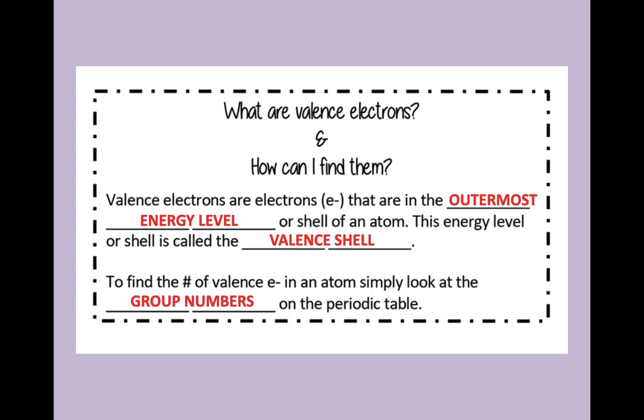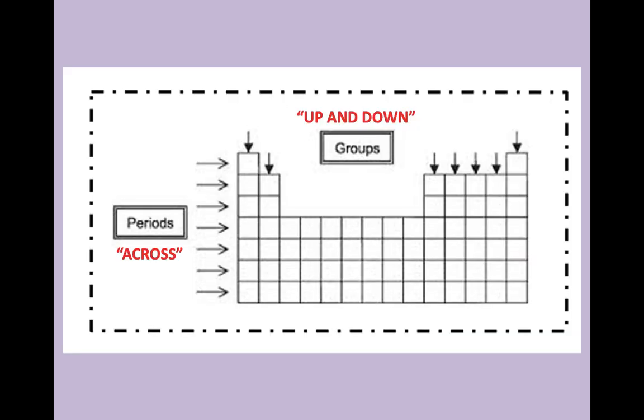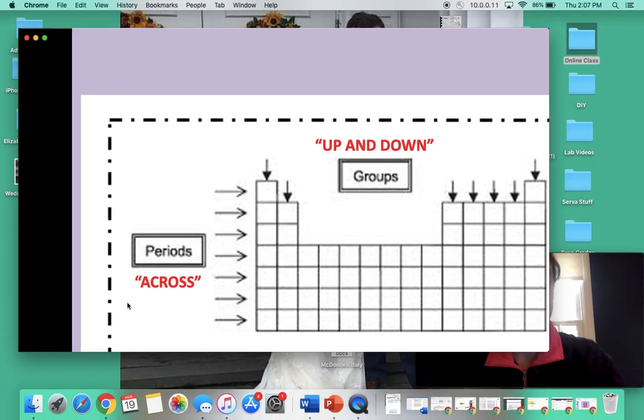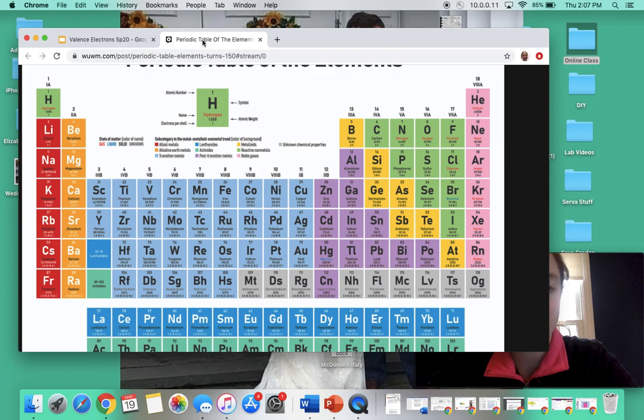There are a few tricks you can use to find the number of valence electrons. One of them is to simply look at the group numbers on the periodic table. I'm going to go back to the periodic table for a second. If we look at the group numbers on the periodic table at the top, the group numbers are at the top. One, two, three, four, five, six, all the way up to 18. You can look at the A's and the B's as well, but I find it easier to look at the actual numbers.